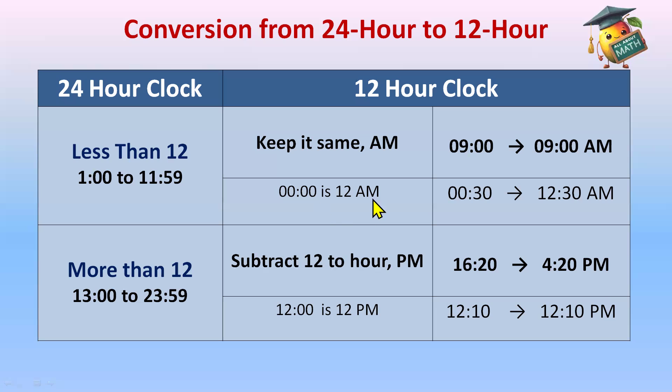So 00:00 is 12 A.M. and 12:00 is exactly 12 P.M. And less than 12 keep the numbers same with A.M. And more than 12 just subtract 12 to the hour and write down P.M. And your 24 hour clock will be converted to 12 hour clock. Easy.